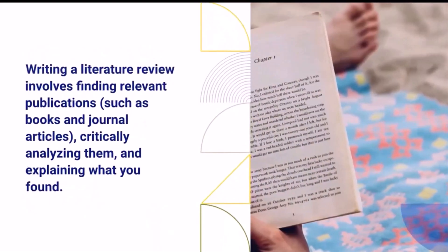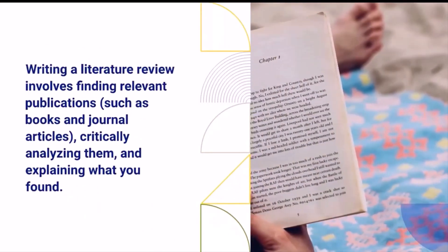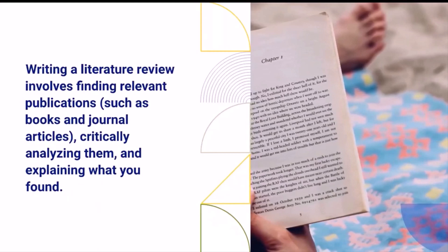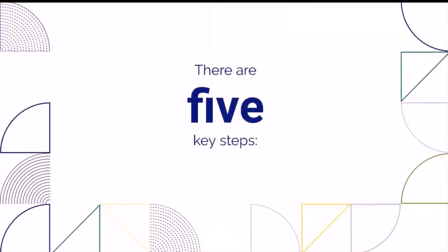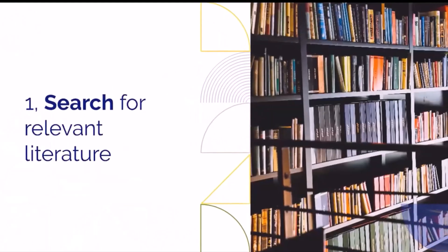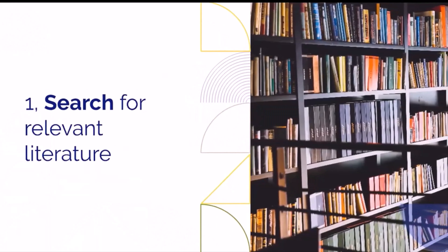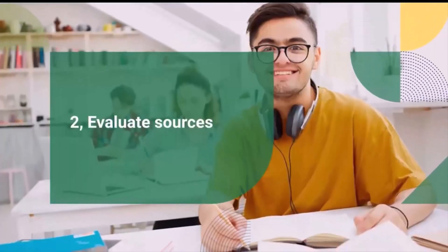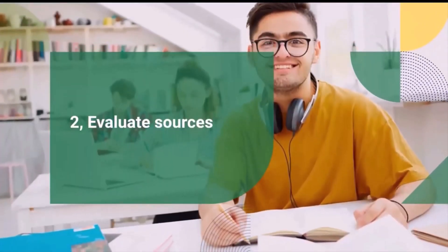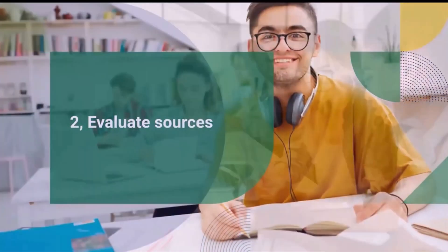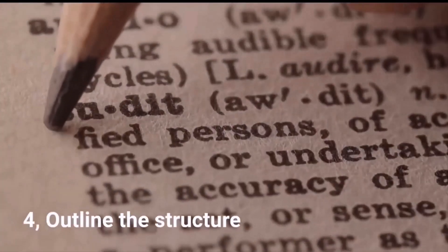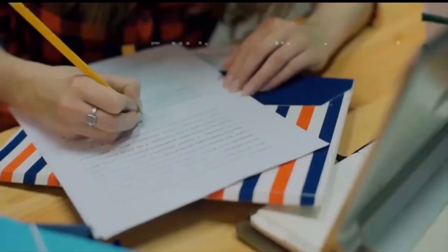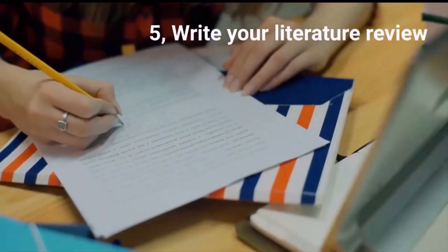Writing a literature review involves finding relevant publications, such as books and journal articles, critically analyzing them, and explaining what you found. There are five key steps: search for relevant literature, evaluate sources, identify themes, debates, and gaps, outline the structure, and write your literature review.